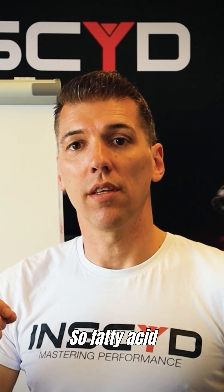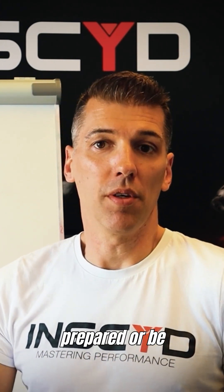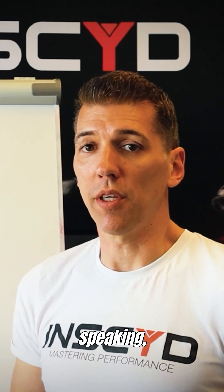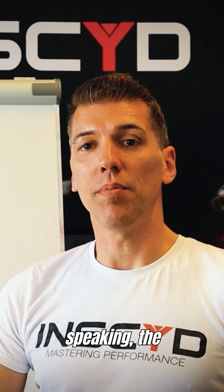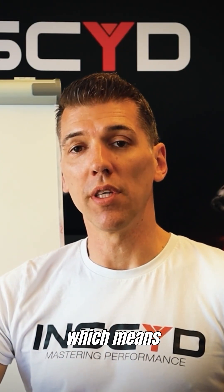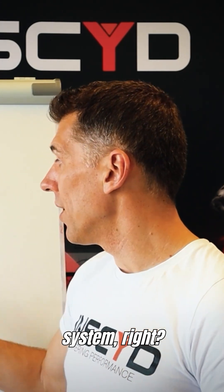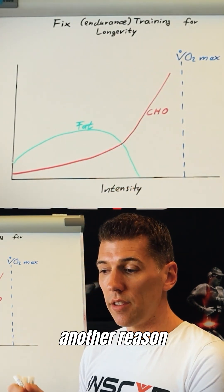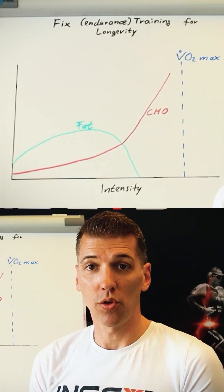Fatty acids need additional oxygen to be prepared and combusted — simplified speaking, to be used in the metabolism. So at fat max, relatively speaking, oxygen uptake is high, which means there's a higher aerobic stimulus, a higher training stimulus on the aerobic system. This is another reason why training at fat max is one of the most important training intensities — because it's the most efficient one to increase VO2 max.